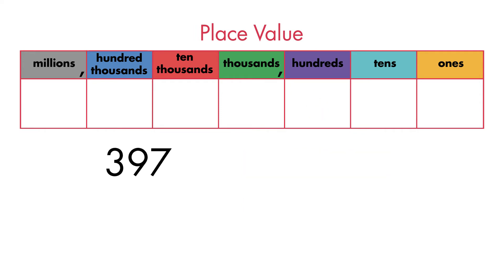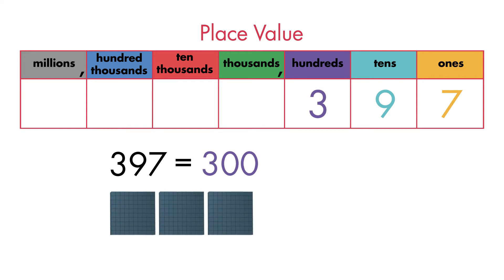To write this number in expanded form, first, we will put it in a place value chart. We can see the placement of the three means its value is 300. The nine is in the tens place, so its value is 90.